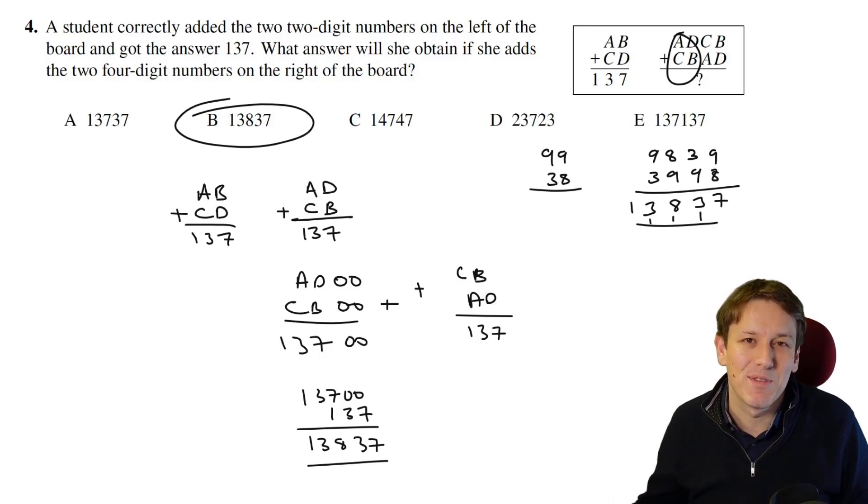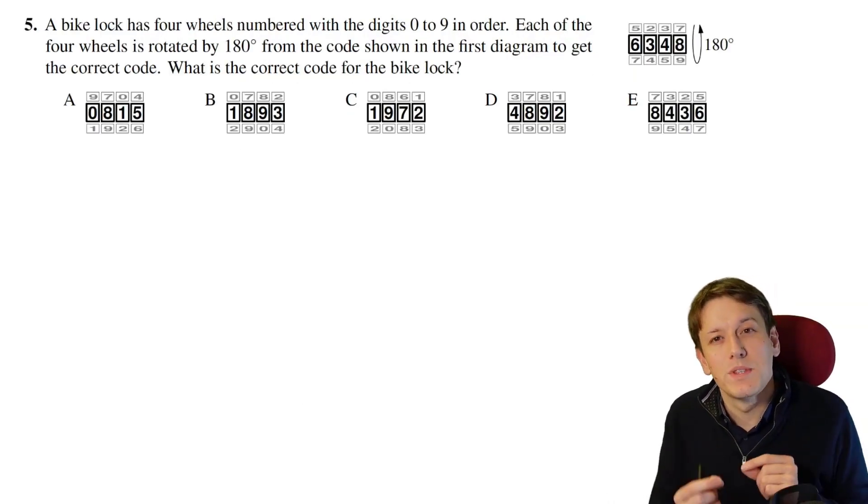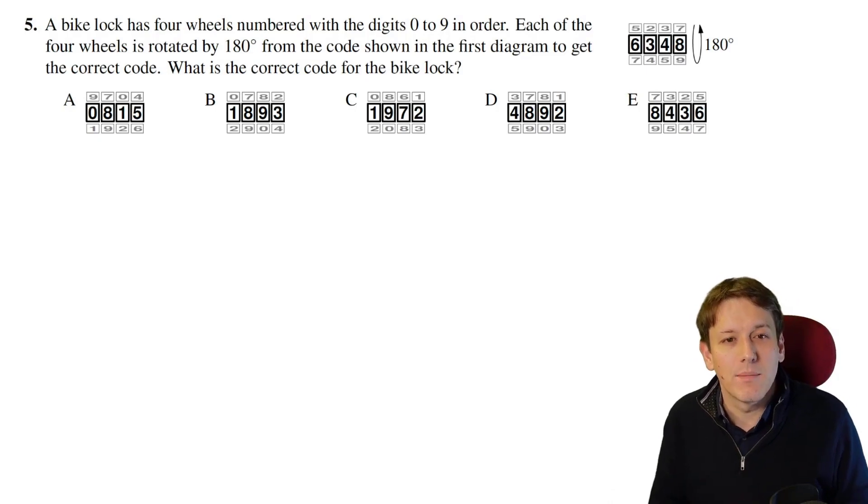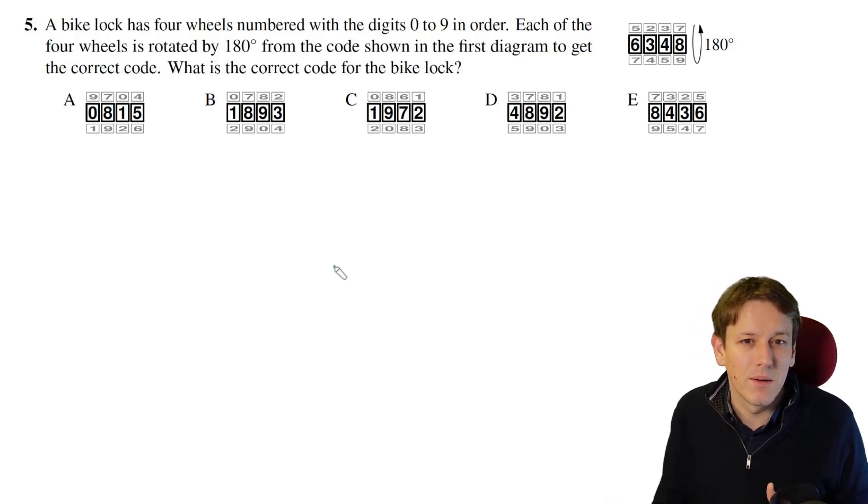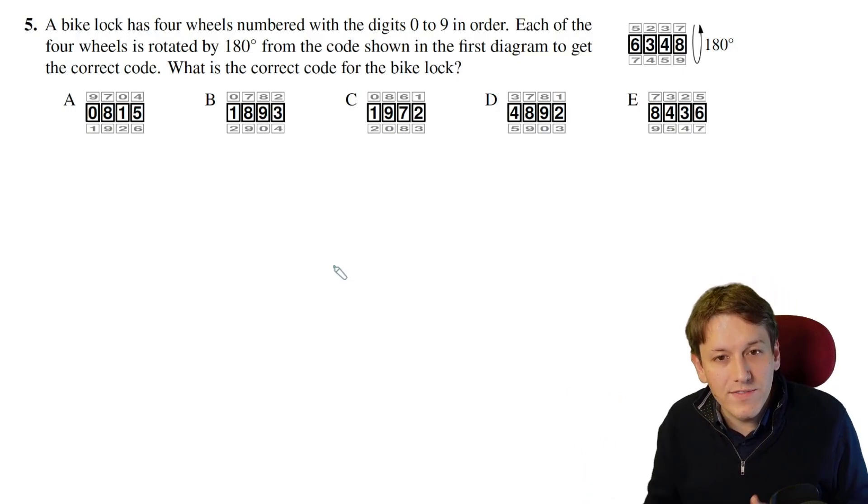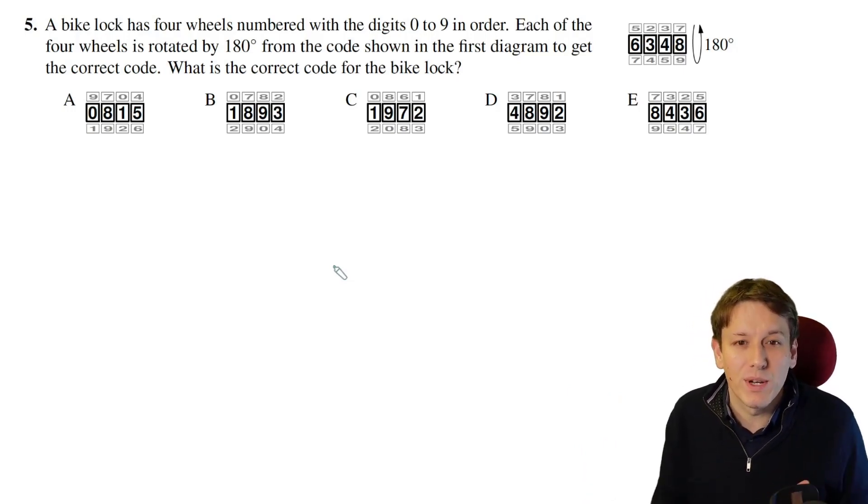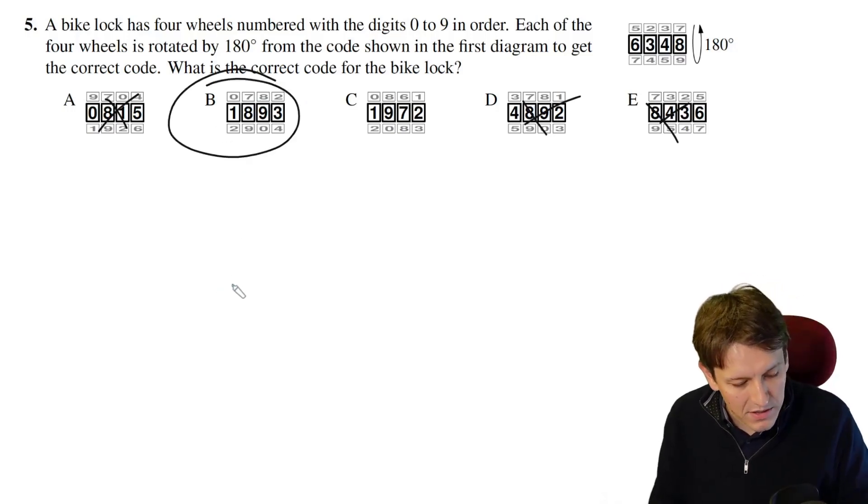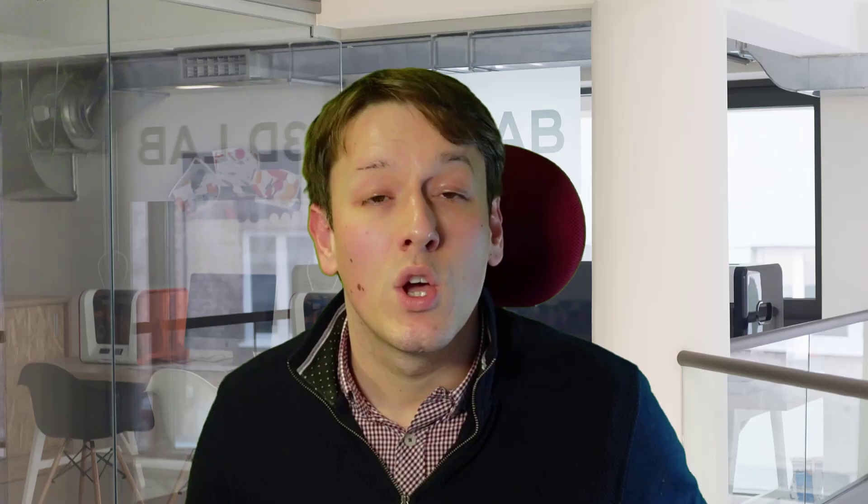A bike lock has these four wheels numbered with 0 to 9 in order, which means there's 10 digits on them in total on each of those wheels. When we rotate by 180 degrees, the numbers are just in order, so we're going to move on five spaces in each. It doesn't matter if we go forward or backwards here. 6 will go either forward or backwards to 1, so that already narrows it down to everything apart from B and C. 3 will become 8, and there we go, we've got that the answer is B. You can also check: 4 plus 5 is 9, 8 plus or minus 5 is 3 or 13, but either way we get to 3. So the answer is B.